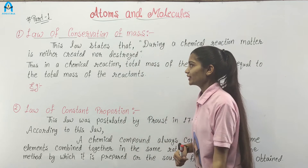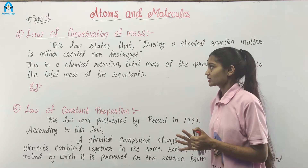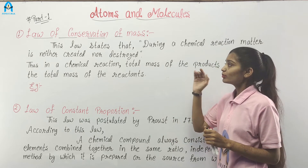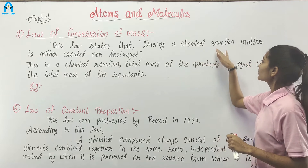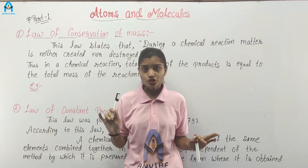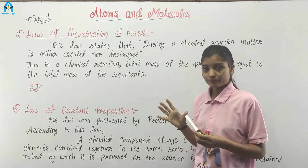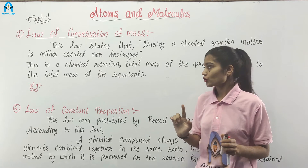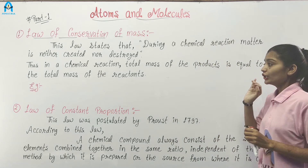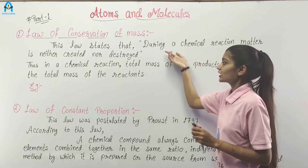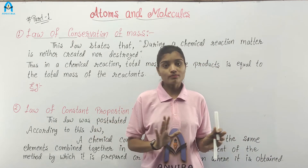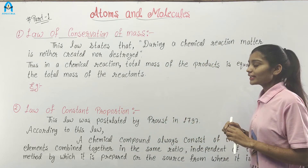Our first law of chemical combination is the law of conservation of mass. This law was proposed by Antoine Lavoisier and states that during a chemical reaction, matter is neither created nor destroyed. In other words, in a chemical reaction, the total mass of the products is equal to the total mass of the reactants. Let's take an example.